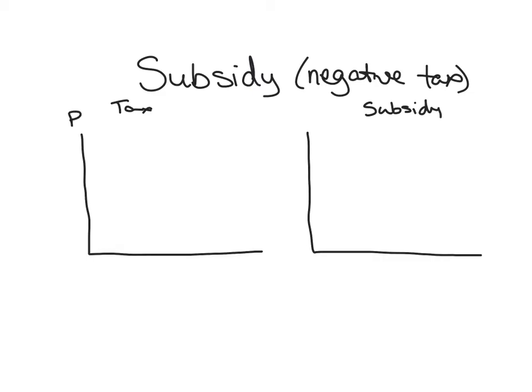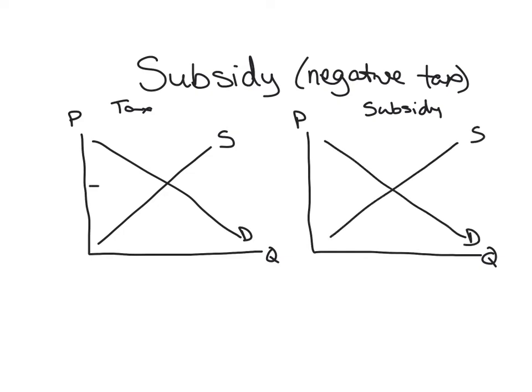So this will be a tax and this will be a subsidy. So we have price and quantity, price and quantity, and we'll set everything up the same, supply, demand, supply and demand. And we'll start at our equilibrium, Q star, P star.